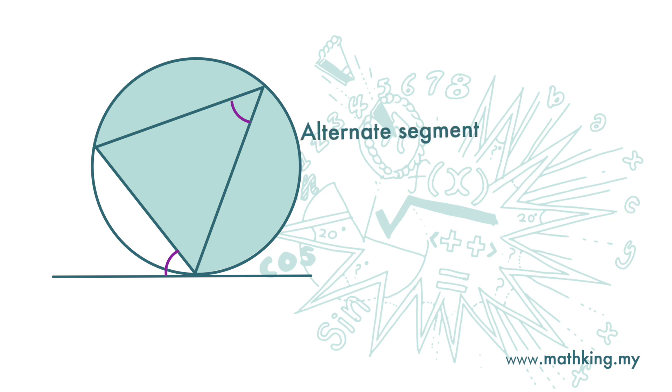The angle can be this, or this, or this. All these angles are equal because they are subtended by the same arc.